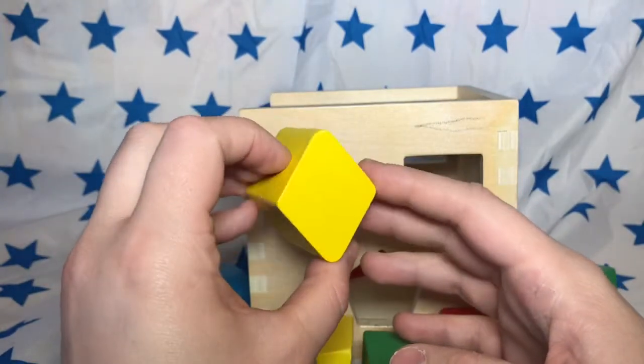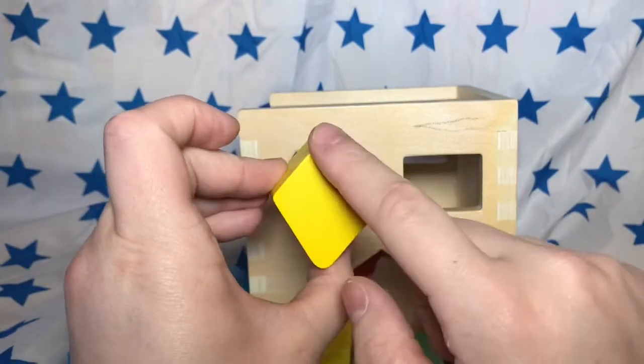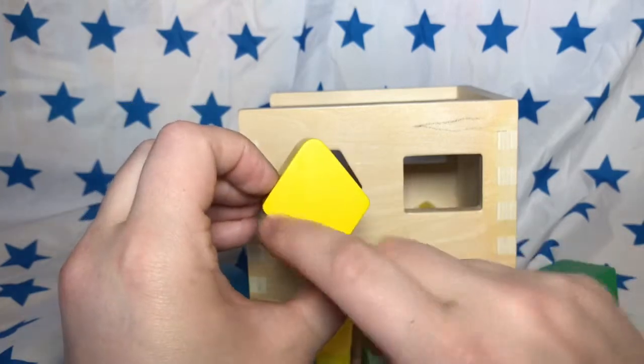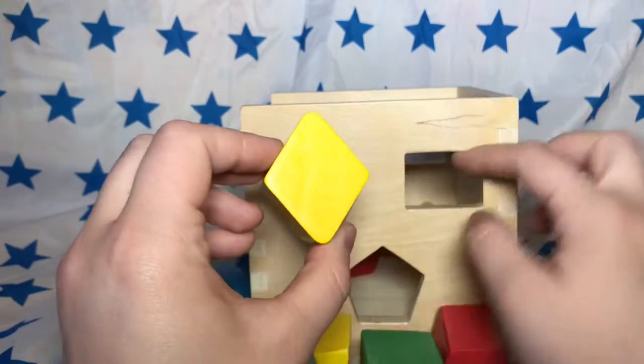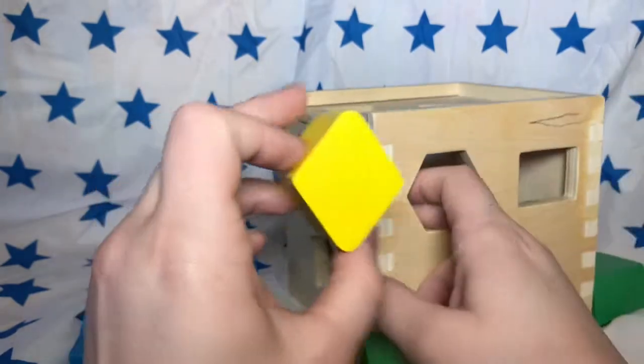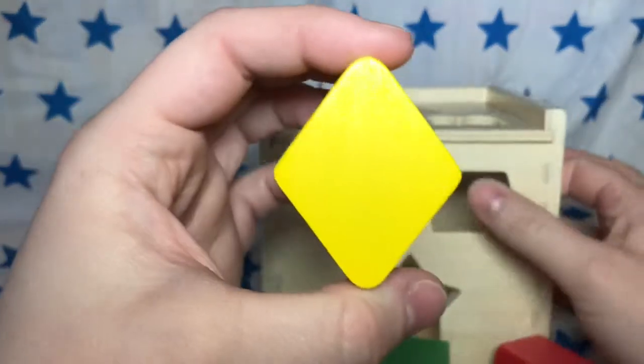This is a yellow diamond. It has four sides and they're slanted. One, two, three, four. We have to find where it matches. A yellow diamond.